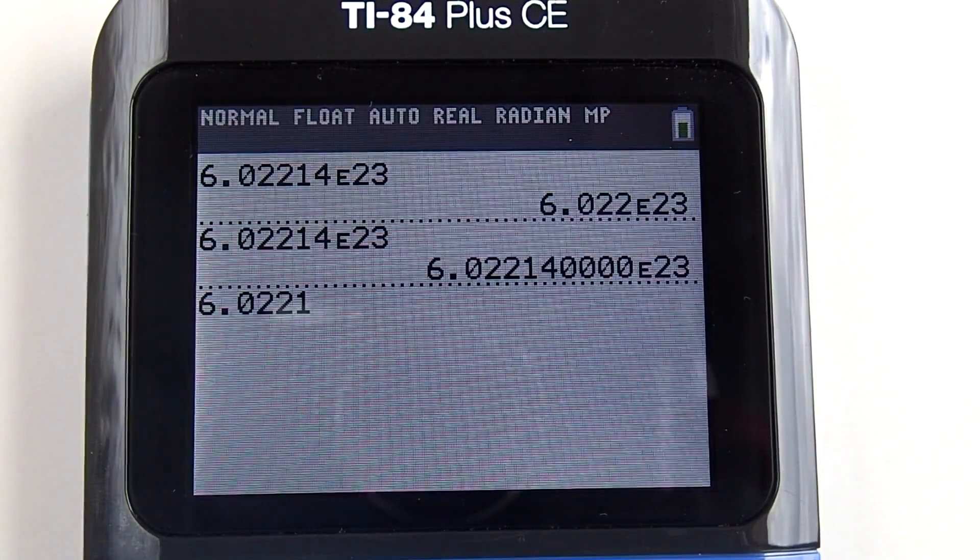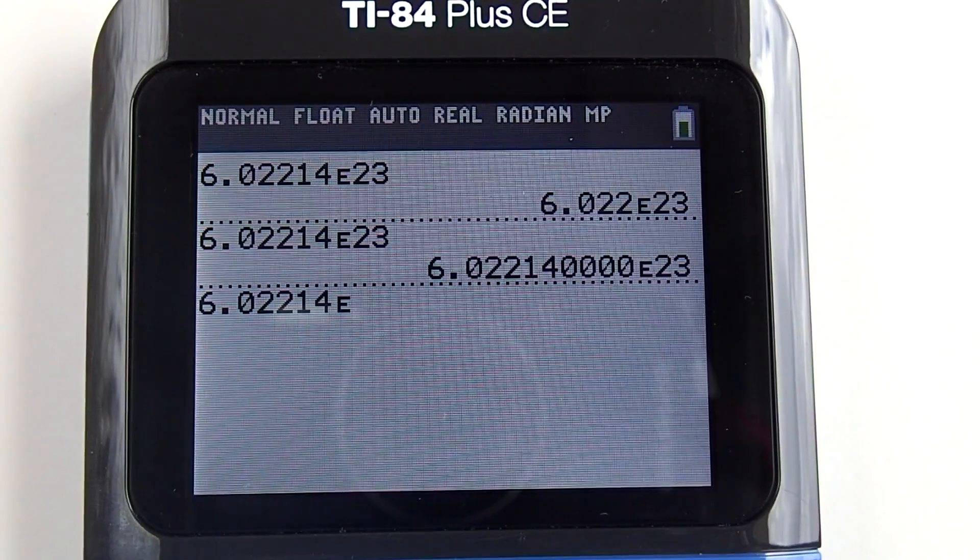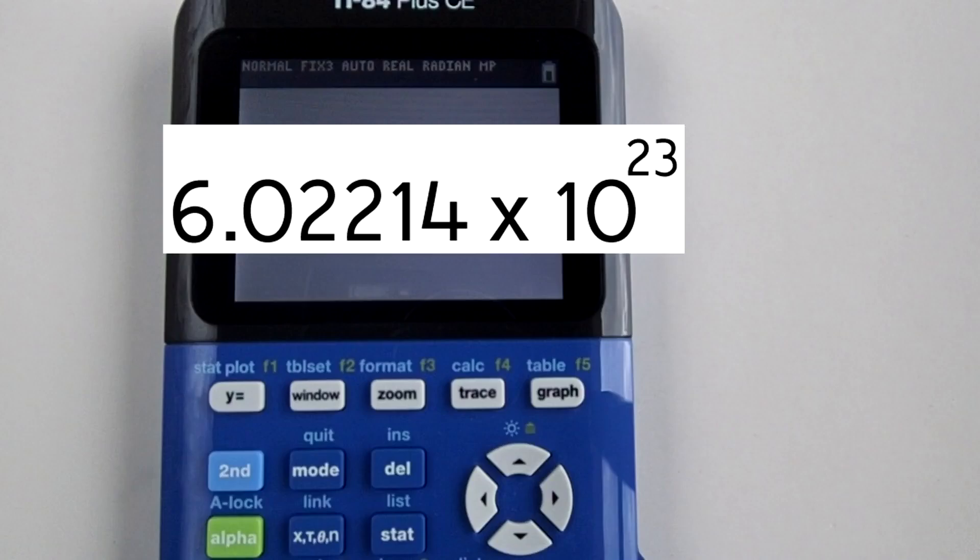Hi, this is Rob. I'm going to show you the proper way to enter scientific notation in the TI-84 Plus CE Calculator. We are going to enter this number, 6.02214 times 10 to the 23rd.